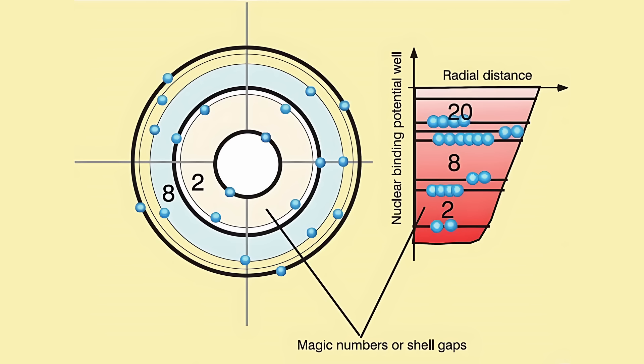In nuclear physics, the concept of magic numbers refers to specific numbers of protons and neutrons that result in highly stable nuclei. These numbers 2, 8, 20, 28, 50, 82, and 126 are thought to arise from shell-like structures within the nucleus, similar to how electron shells define the chemical properties of elements.